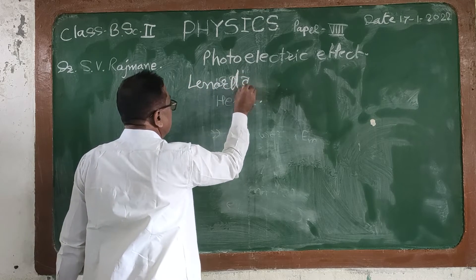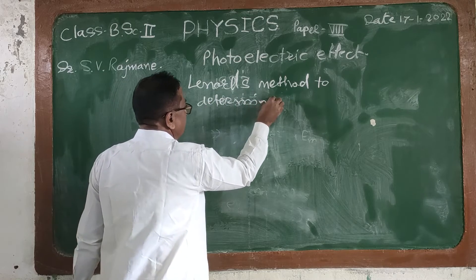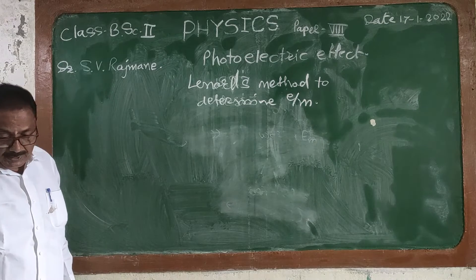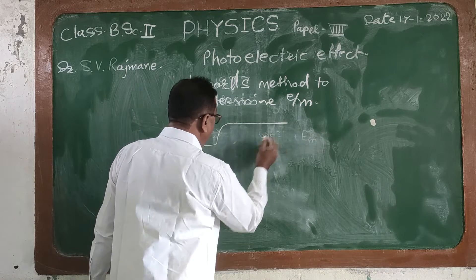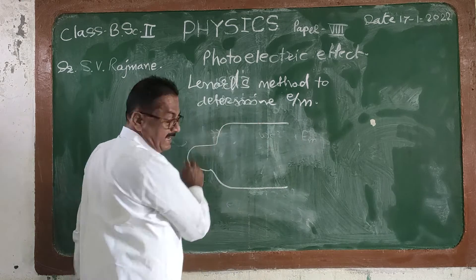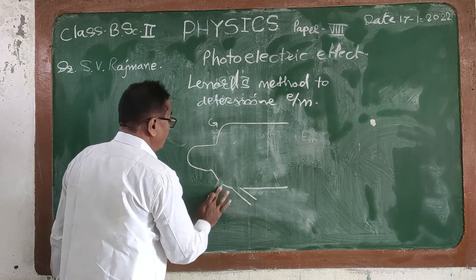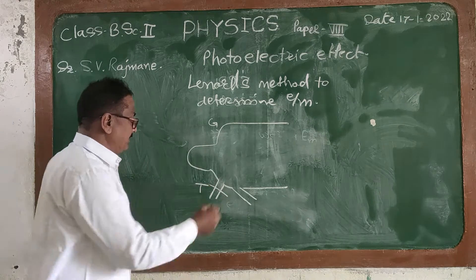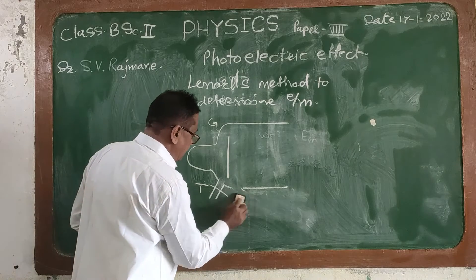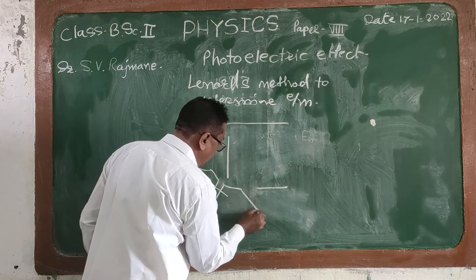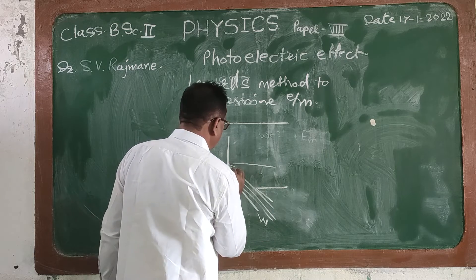We will now discuss Lenard's method to determine the charge-to-mass ratio, that is e/m. For this purpose, we consider a simple figure in which there is a bulb G. This bulb has a side tube T for evacuation. There is a cathode inside this bulb, and on the cathode there is a side window W through which light is incident on the metal surface.